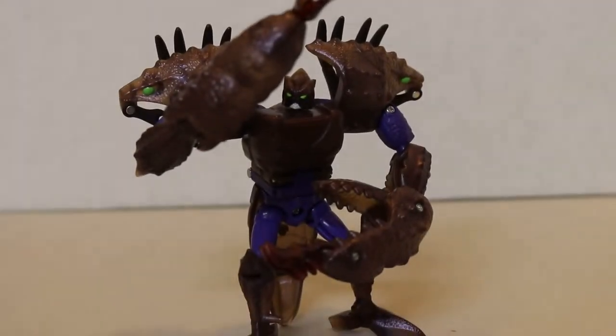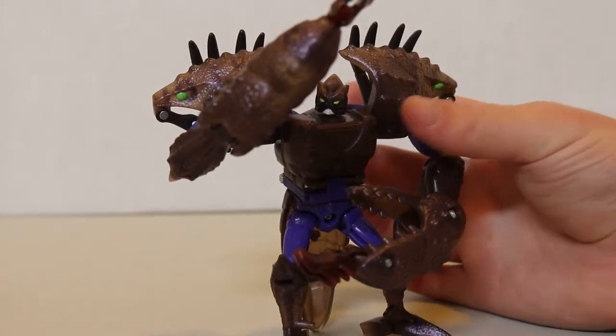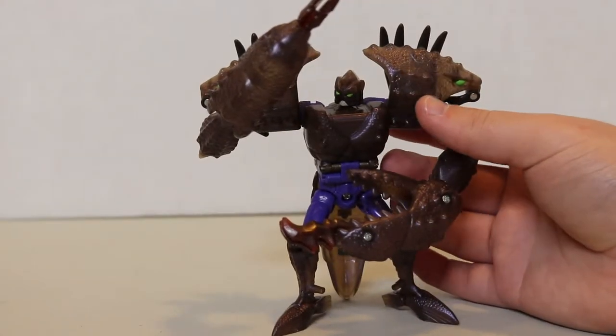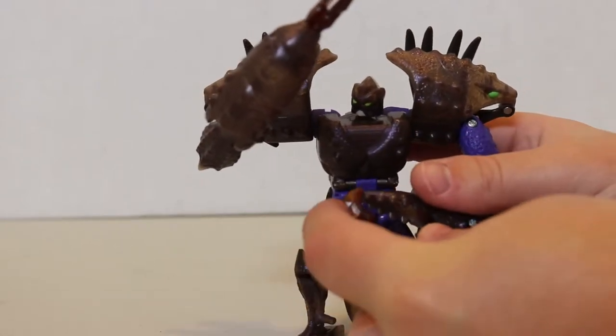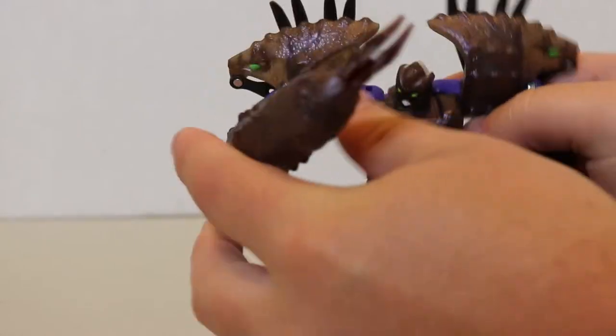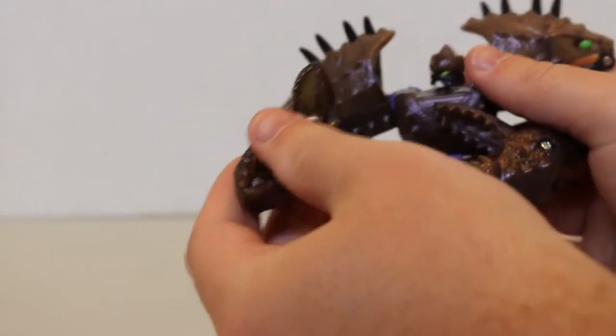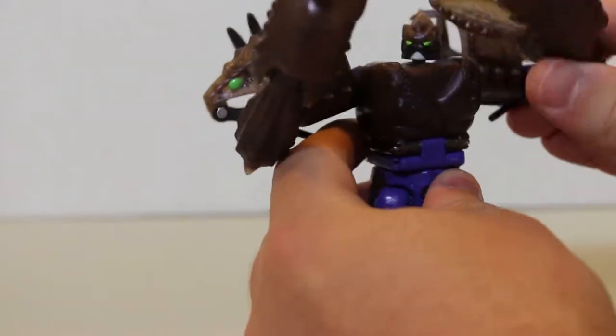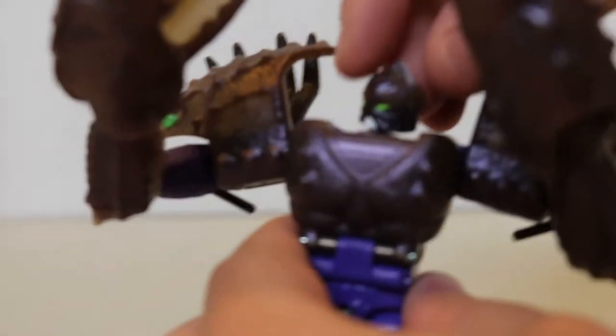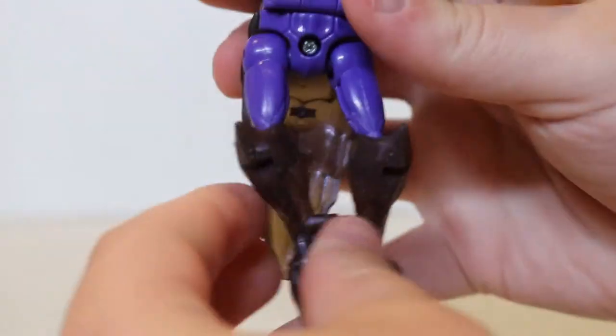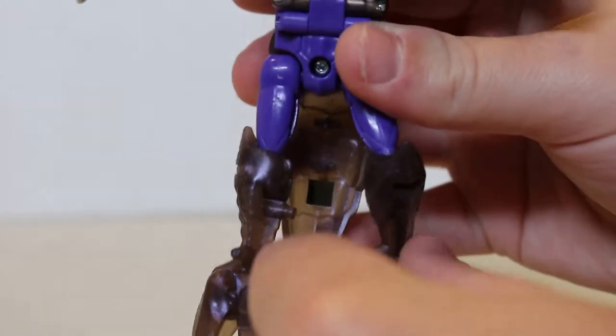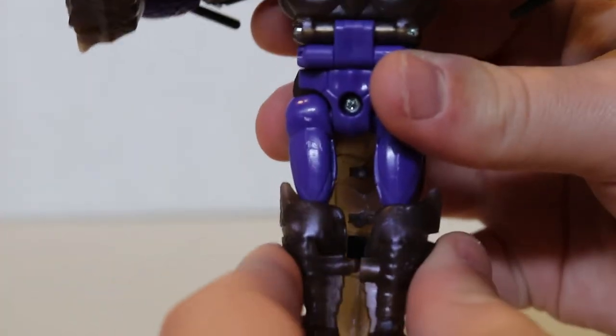All right, now to begin combining Tripredicus, we will start with Sea-Clamp. Sea-Clamp transforms into the lower torso. We will begin by flipping closed these blade weapons. And we will now open up his torso piece, retract his head, transform his lower torso back into the configuration it was during his crayfish mode, like this.